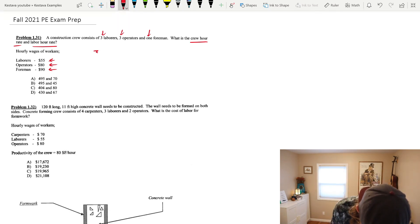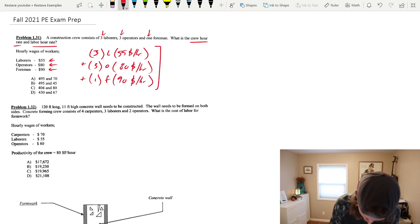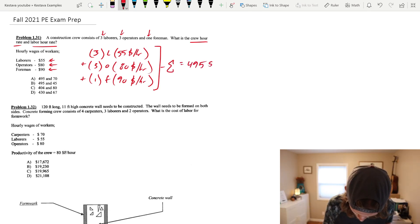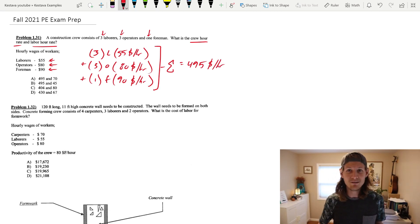And for that, we're going to go three laborers, so I'm going to say 3L at $55 an hour plus three operators, O, at $80 an hour plus one foreman, F, at $90 an hour. All that added up together gets us a total of $495 per hour. And this is U.S. dollars for everyone here in the U.S. So right there, that is the crew hour rate.